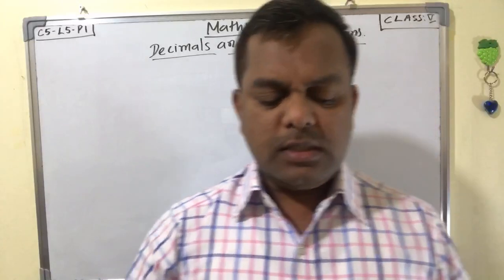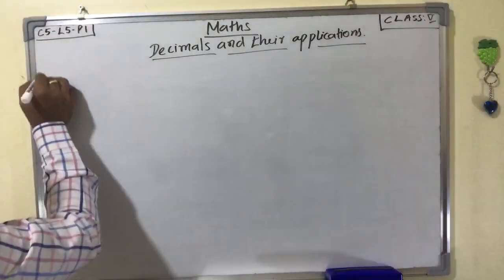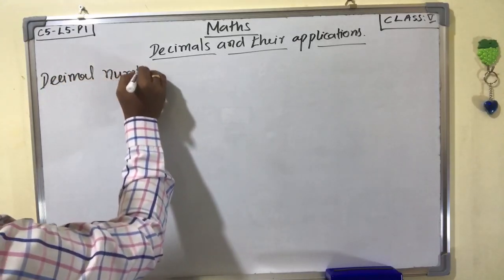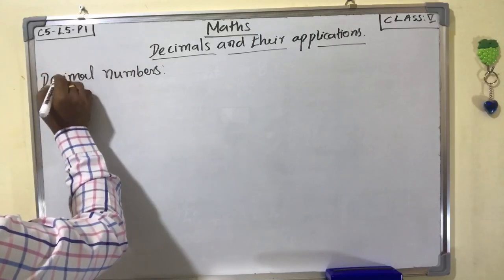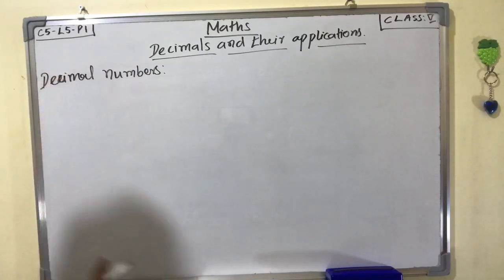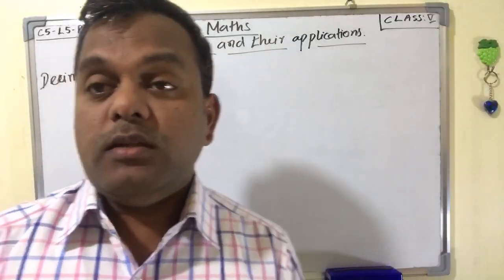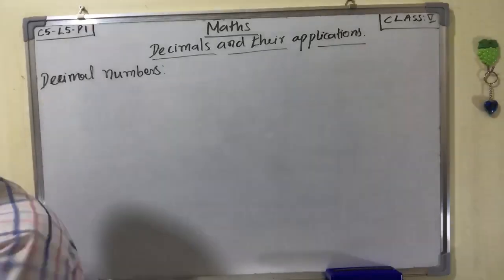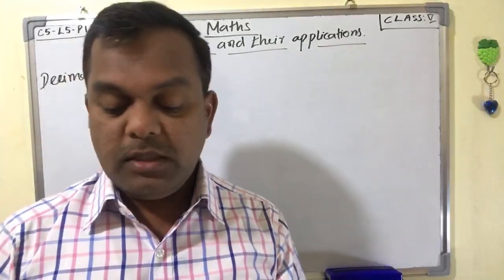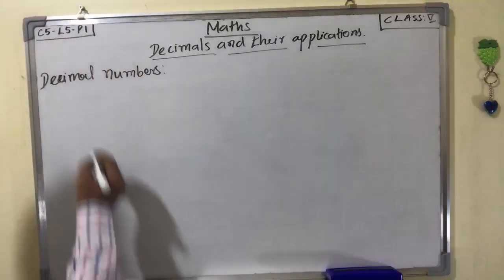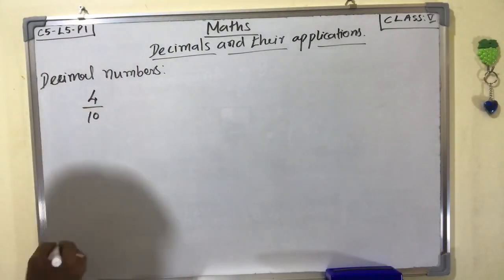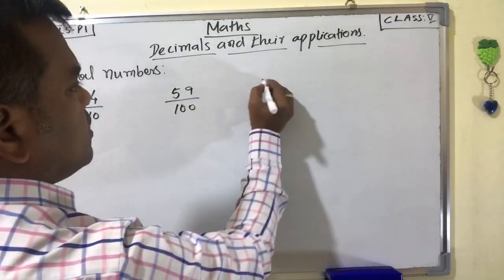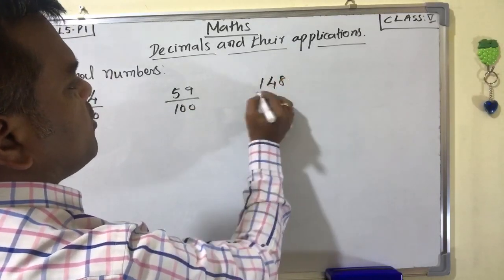First, you want to know what is decimal numbers. The fractions with 10, 100, 1000 and so on as denominators are called decimal numbers. For example, 4 by 10, 59 by 100, 148 by 1000.